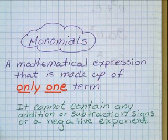Hi, this is Mrs. Earle with another pre-algebra tutorial. Today's topic: monomials. A monomial is a mathematical expression that is made up of only one term. It cannot contain any addition or subtraction signs or negative exponents.